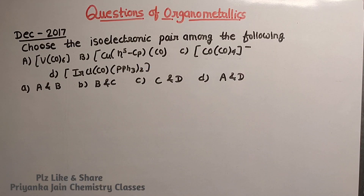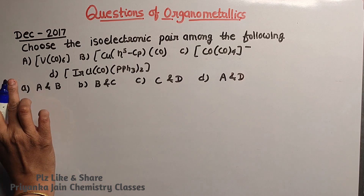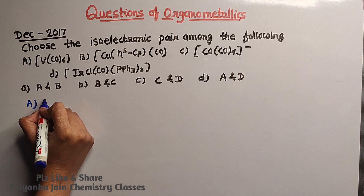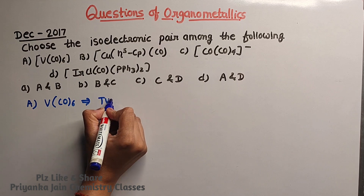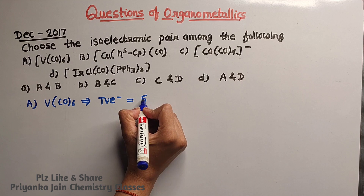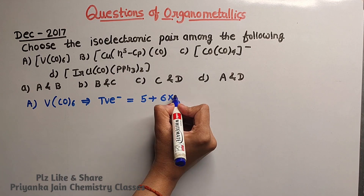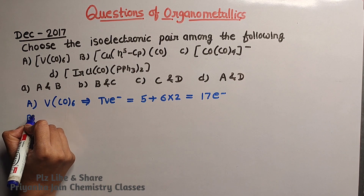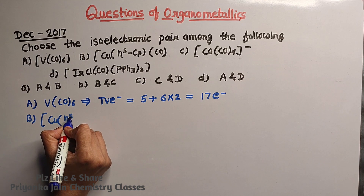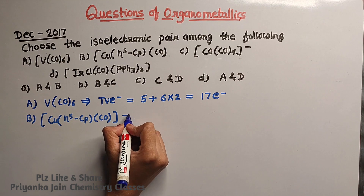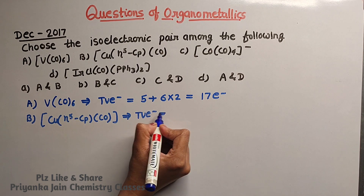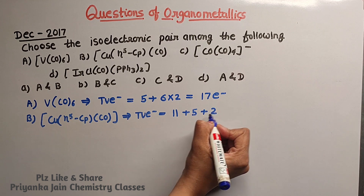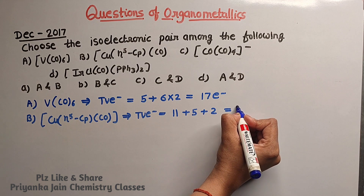This question from December 2017: choose the isoelectronic pairs among the following. Four options are given and we have to find isoelectronic species. For V(CO)6: total valence electrons = 5 from vanadium plus 6×2 = 12 from carbonyls, giving 17 electrons. For the Cu-cyclopentadienyl complex: copper has 11 electrons, plus 5 from cyclopentadienyl and 2 from the other ligand, giving 18 electrons total.